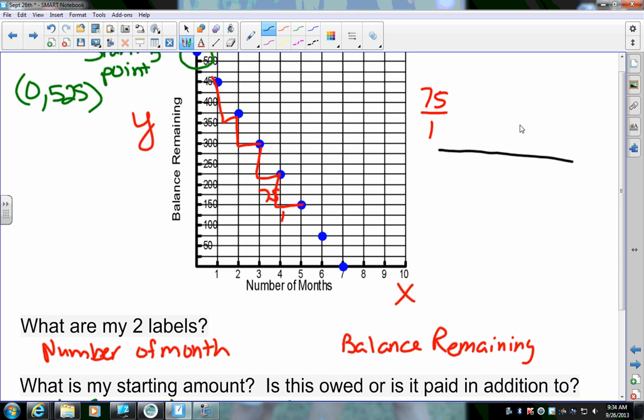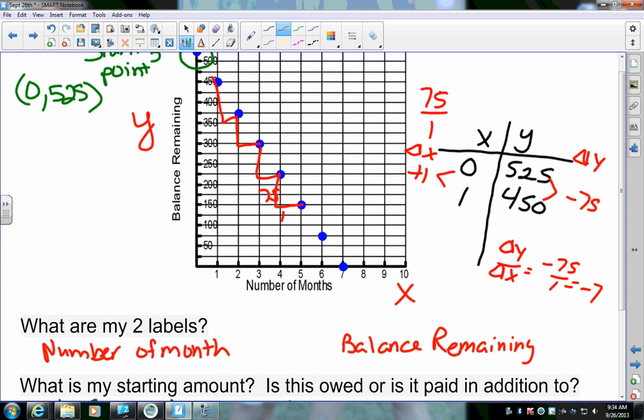Another way is what I was trying to show yesterday with what we were doing. I've got 0 and 525. 1 and 450. Well, if you do delta y over delta x, the change in y, that is minus 75. And delta x, the change is plus 1. So, delta y over delta x, negative 75 over 1, which is negative 75.